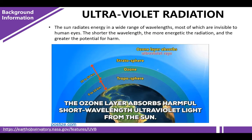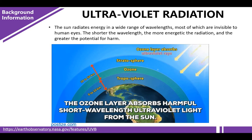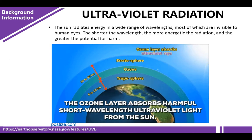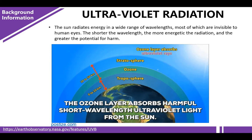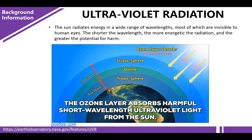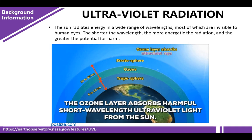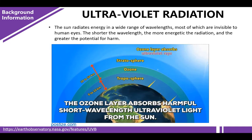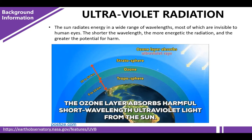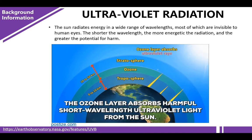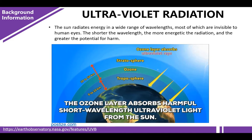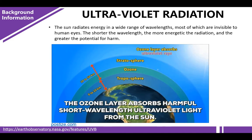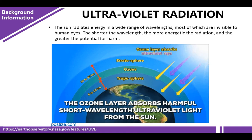The Sun radiates energy in a wide range of wavelengths, most of which are invisible to human eyes. The shorter the wavelength, the more energetic the radiation is, and the greater the potential for harm. The ozone layer absorbs harmful short-wavelength ultraviolet light from the Sun, making it important for protecting people from the harmful effects of UV light.